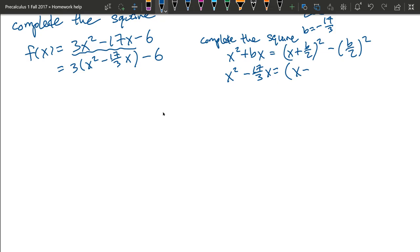Now here we have to take b and divide it in 2. And so what is negative 17 thirds divided by 2? That's negative 17 sixths. Just take this and multiply it by half, and you'll have negative 17 in the top and 6 in the denominator. So that's negative 17 sixths squared minus 17 sixths squared. So that square is completed.